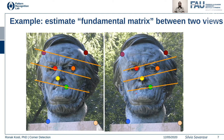Another example is estimating the fundamental matrix between two views. The fundamental matrix is a 3×3 matrix representing the transformation between two stereo image pairs — images of the same scene taken from a slightly different angle. Feature point detection helps estimate this transformation so you can find the relationship between the two views and match every point in the image pair.